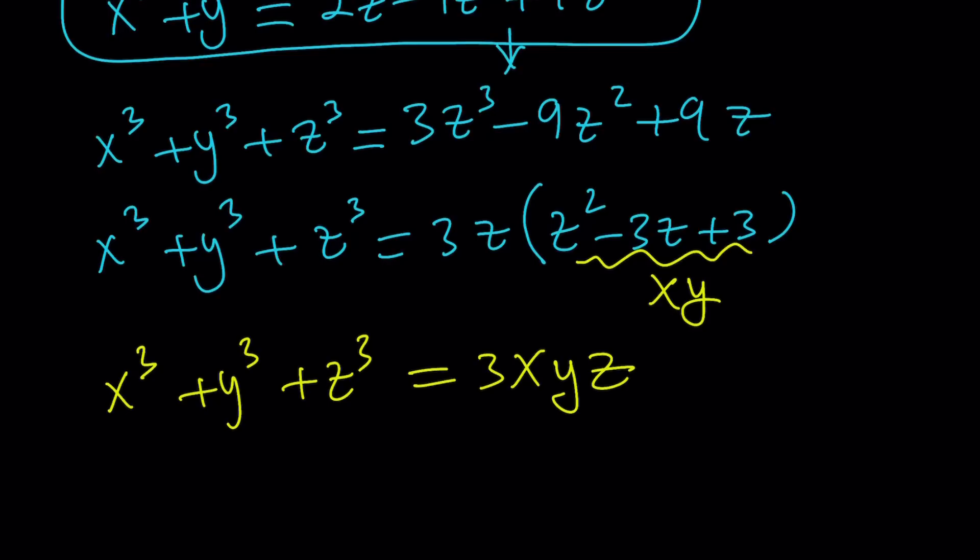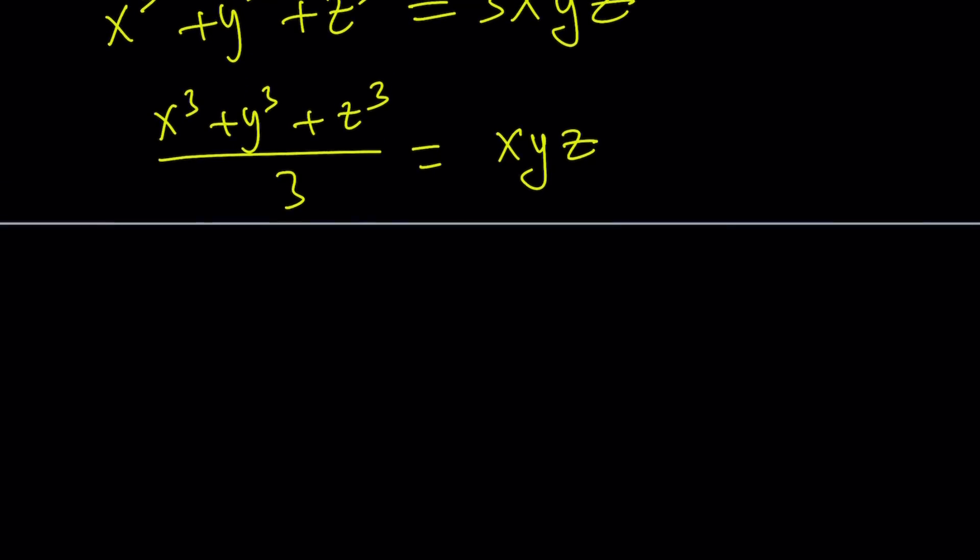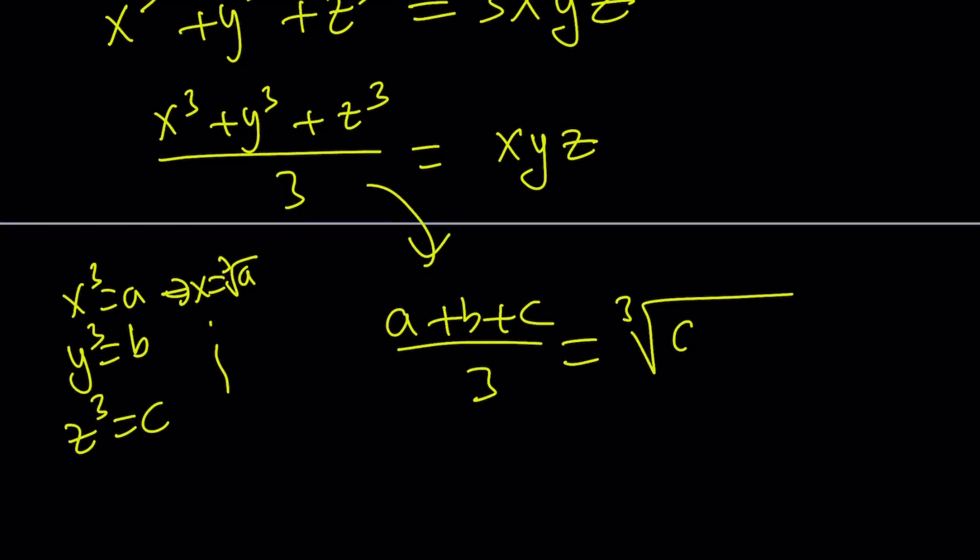I'm going to divide both sides by 3 and show you something we've been using recently in our videos. I find this actually amazing, fascinating, incredible, unbelievable, awesome, magnificent, whatever you want to call it. It's beautiful. I'm going to replace, and since if x is positive, x cubed is positive and vice versa, I'm going to set x cubed equal a, y cubed equals b, and z cubed equals c. This implies x equals cube root of a, and so on. Here's what we get: a plus b plus c divided by 3 equals the cube root of abc.